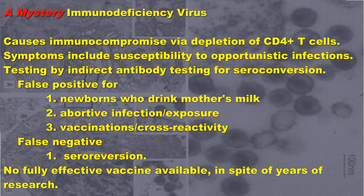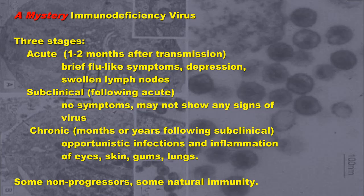False negatives are often caused by seroreversion, where antibody-producing cells are lost during the subclinical phase. There are no fully effective vaccines available in spite of years of research. There are three stages to the disease. The acute stage happens immediately following transmission and includes brief flu-like symptoms, depression, and swollen lymph nodes.